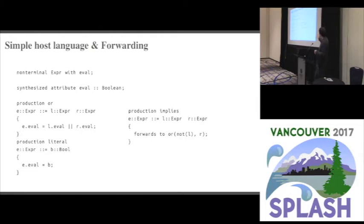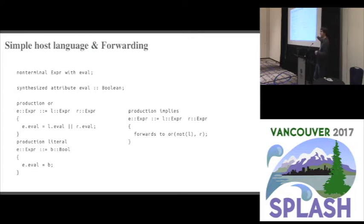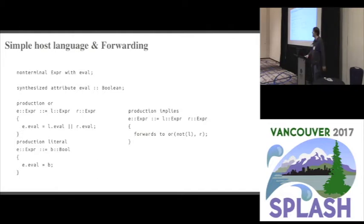On the right we provide an example of what forwarding looks like. This is a new production 'implies', and we say that it forwards to what it's equivalent to: 'not l or r'. Notably, we can but do not have to put equations for all attributes, because what forwarding does is say: if I do not have an equation on this production, I can get a value for that attribute by evaluating it on the tree that I forward to. So eval, for example, would go on this 'not l or r' tree, get an answer, and that would be the value we compute for an implies node.